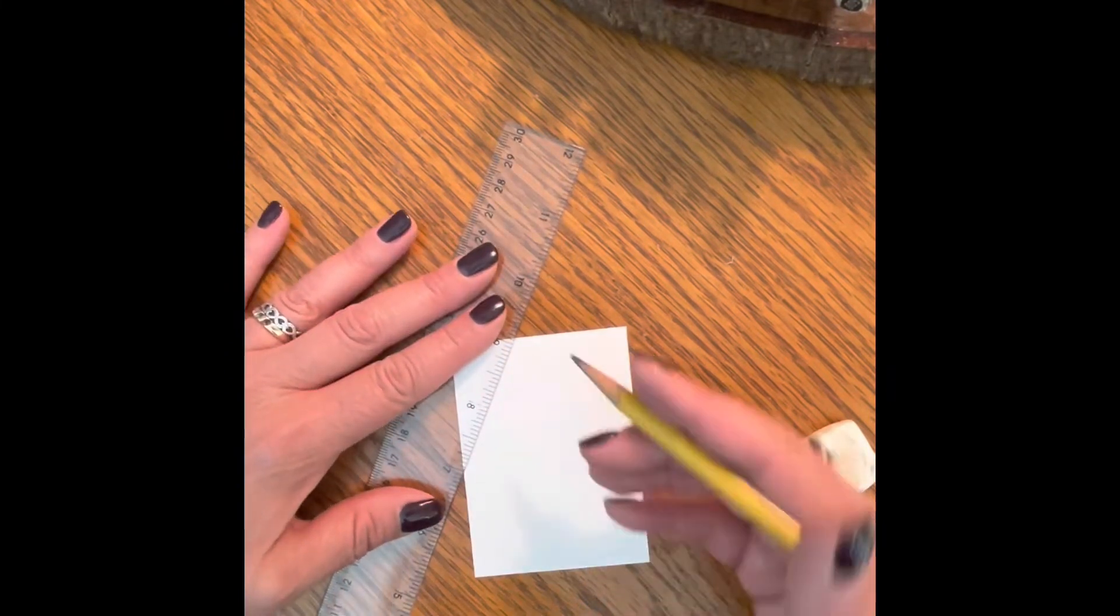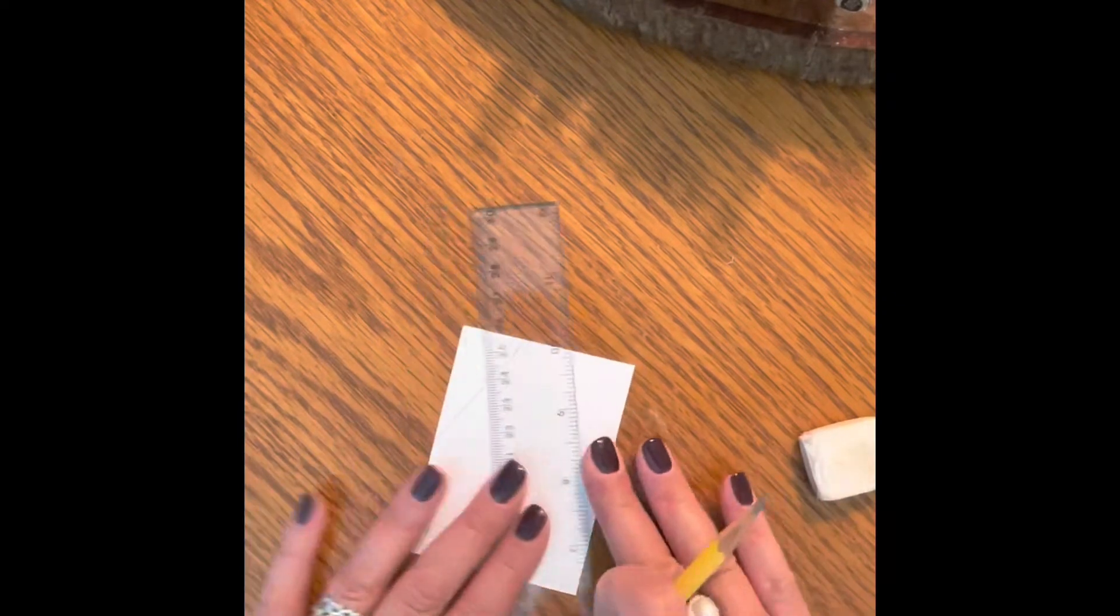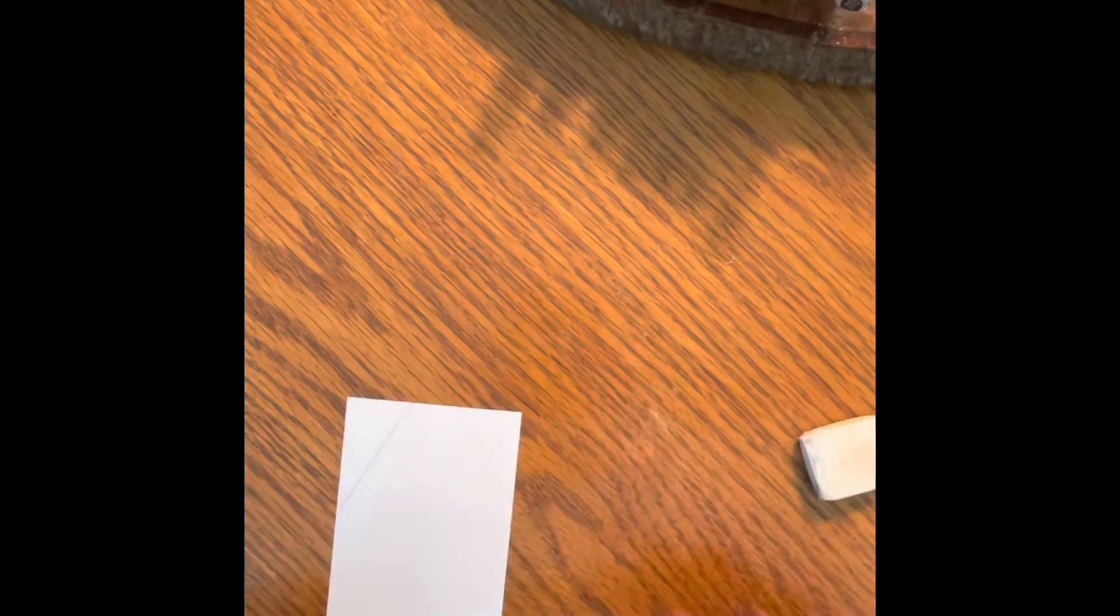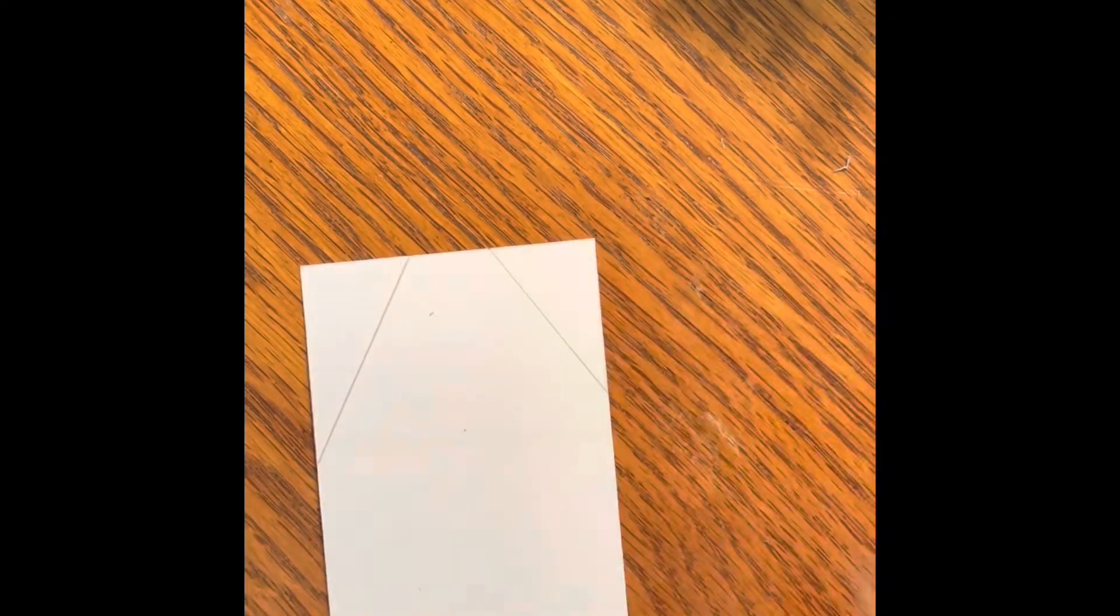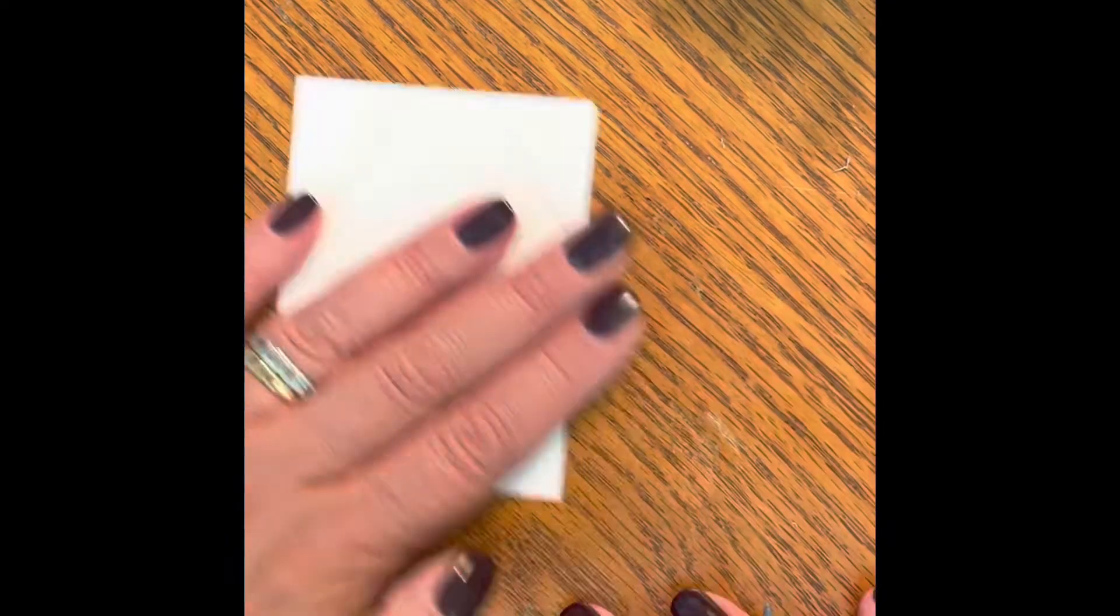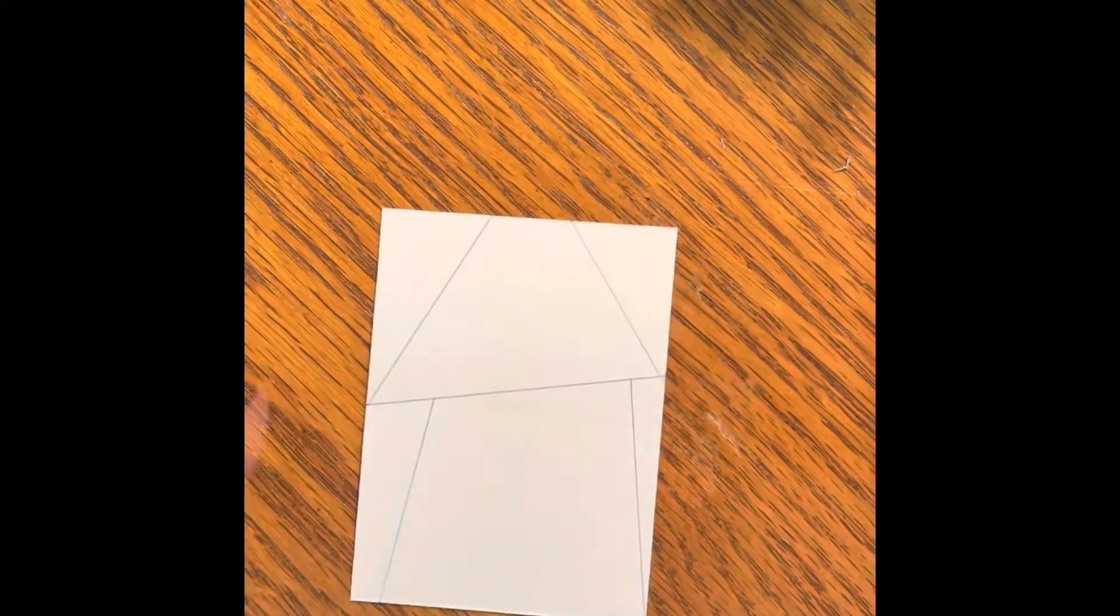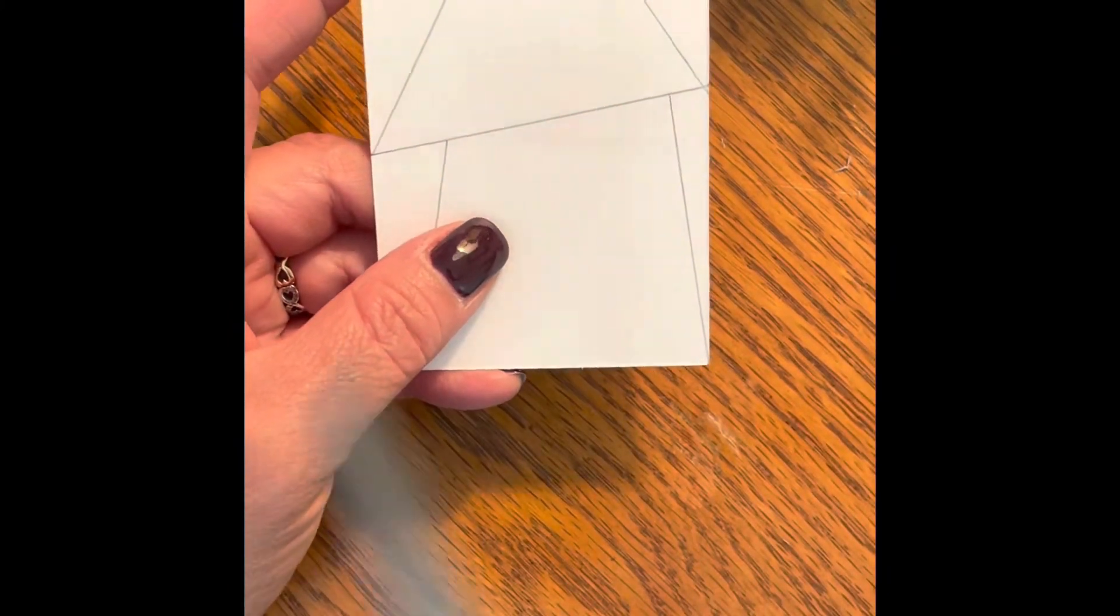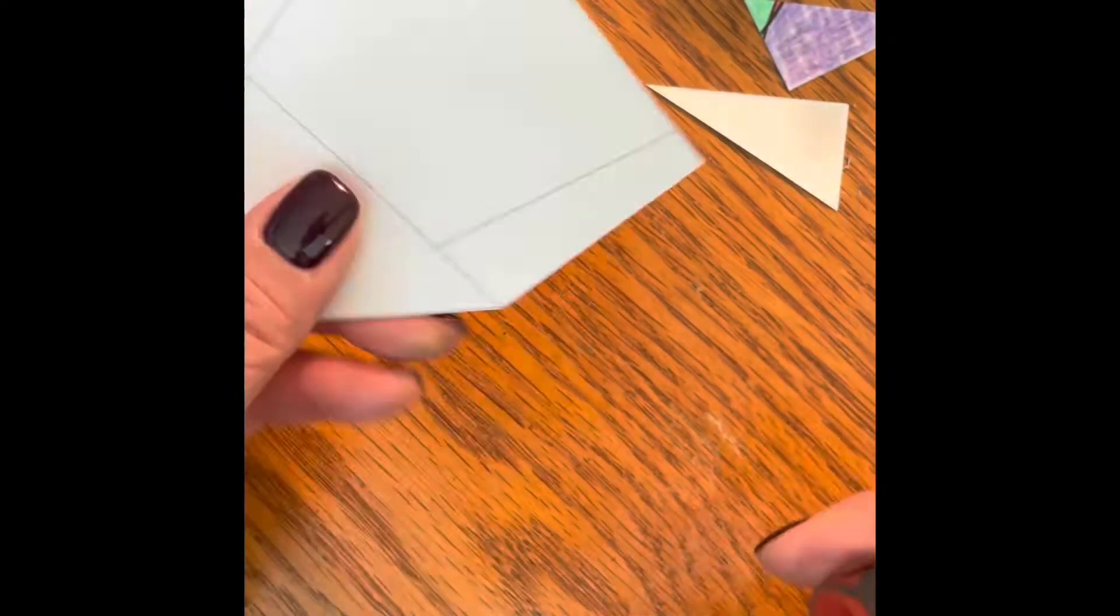So what I'm going to do is actually trace out what I want as far as my house shape on the back of the card. Really not trying to think or overthink anything that I'm doing, just kind of letting it form with each line. And yeah, I'm pretty happy with this. So now I'm going to actually cut my design out.